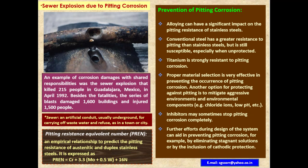The pitting resistance equivalent number, PREN, is expressed as an empirical relationship to predict the pitting resistance of austenitic and duplex stainless steels. It is expressed as: PREN = Chromium + 3.3 × Molybdenum + 0.5 × Tungsten + 16 × Nitrogen.